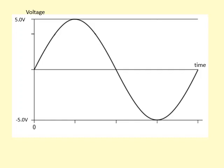Here we have the waveform of an alternating voltage. It has a maximum of plus 5 and a minimum of negative 5. The question is: what is the average voltage? Because it spends equal amounts of time in the positive voltage and in the negative voltage, technically the average should be 0. But this is not useful because that will give us a power of 0.